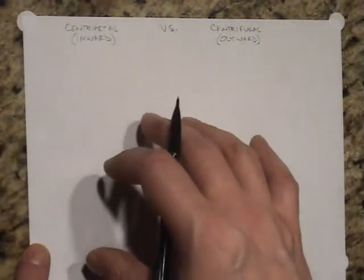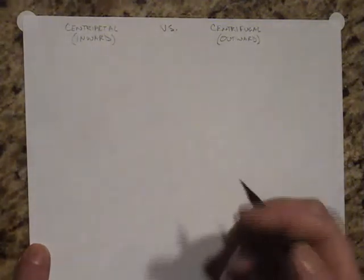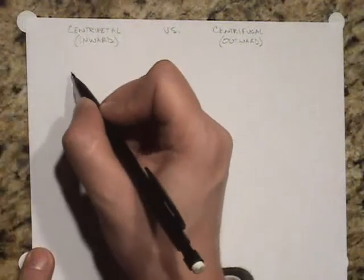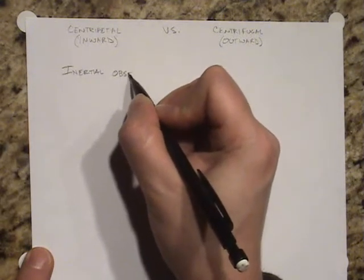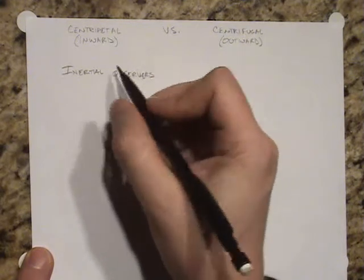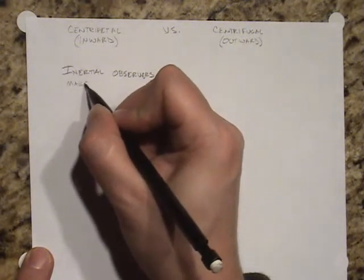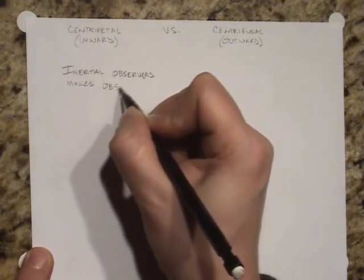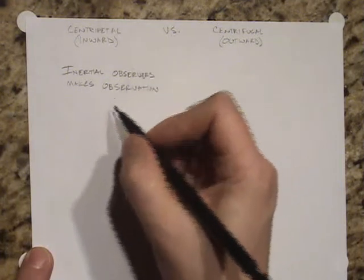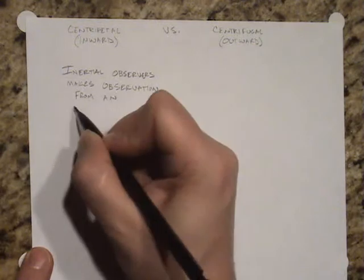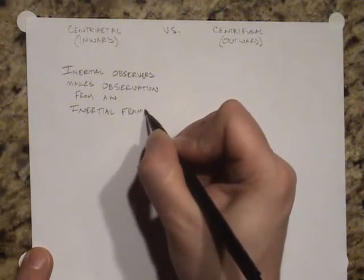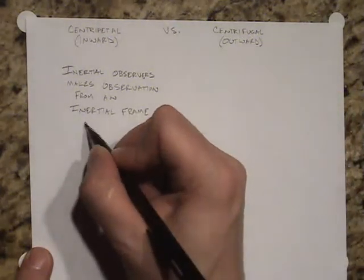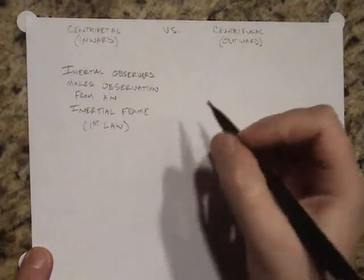So this brings up a situation that we have not yet discussed, but that is that the point of view of the observer makes a difference as far as what they see. And what we're talking about here is the difference between an inertial observer. And inertial observers, they make their observations from an inertial frame. So what does an inertial frame mean?